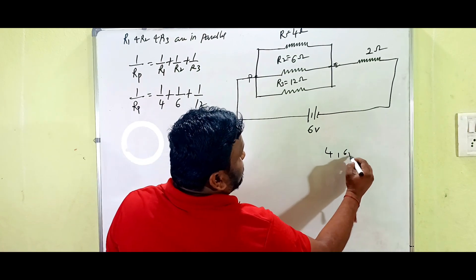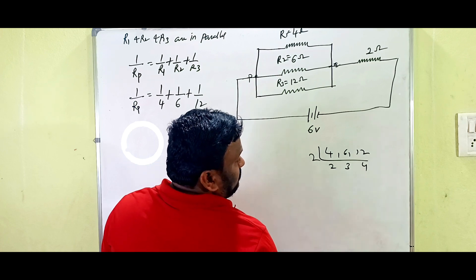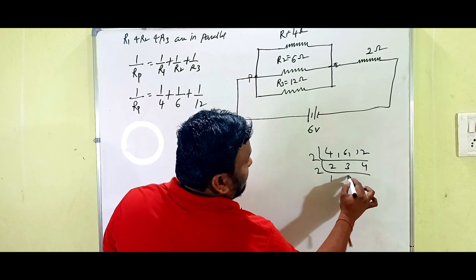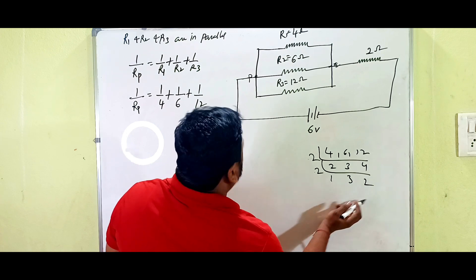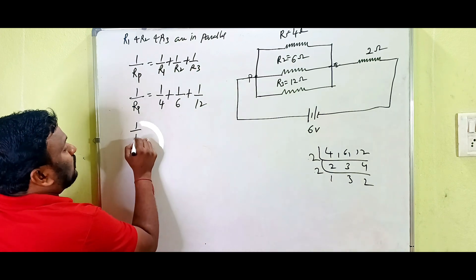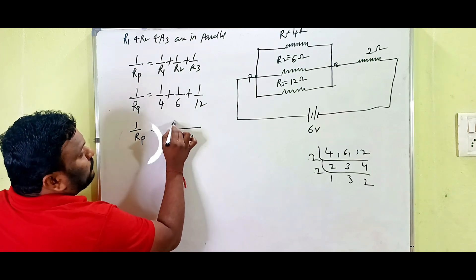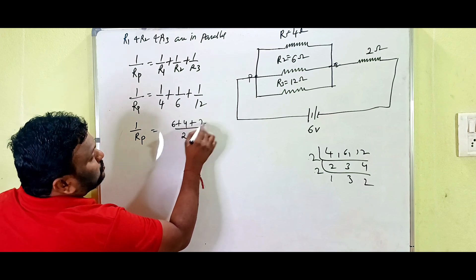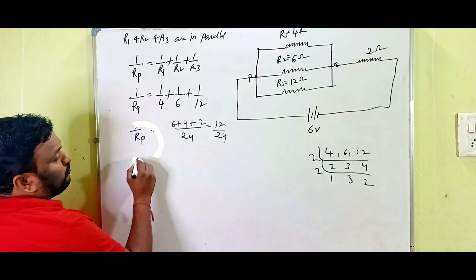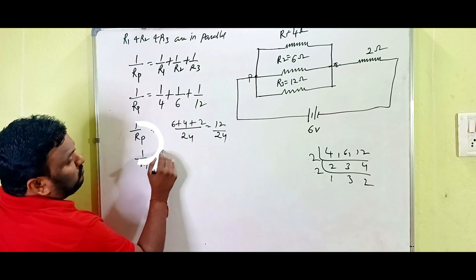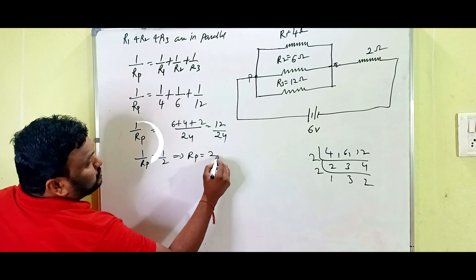Finding the LCM of 4, 6, and 12 gives us 24. So 1/Rp = (6 + 4 + 2)/24 = 12/24 = 1/2. Therefore Rp equals 2 ohms. The parallel combination of these three resistors is 2 ohms.